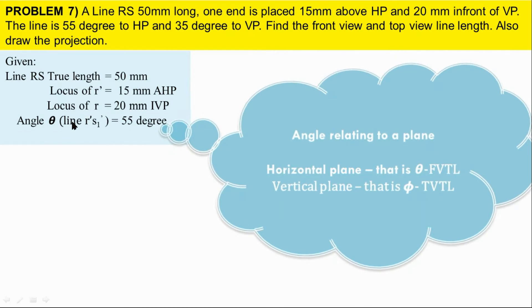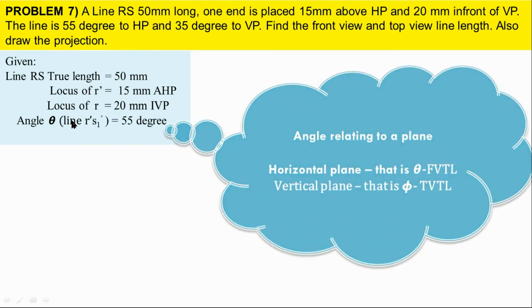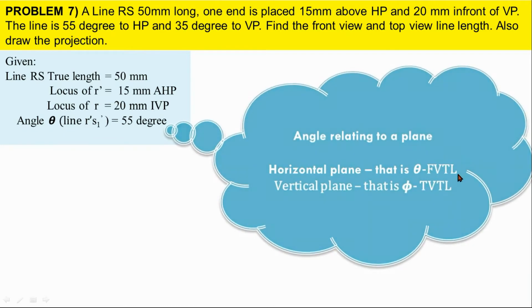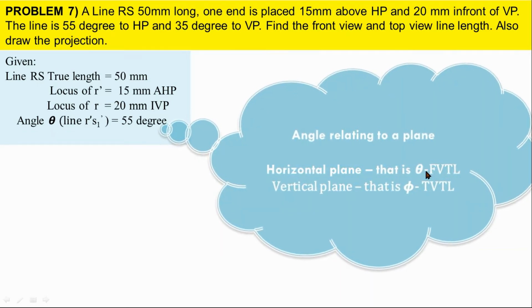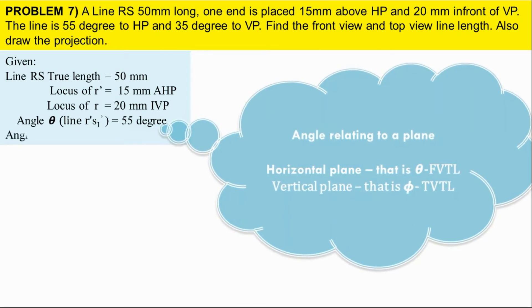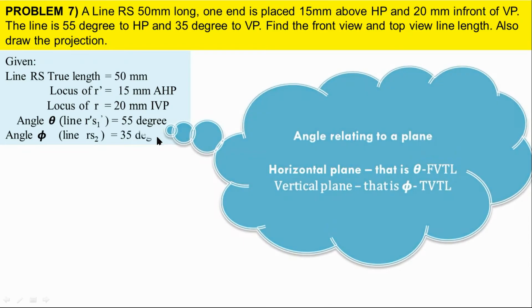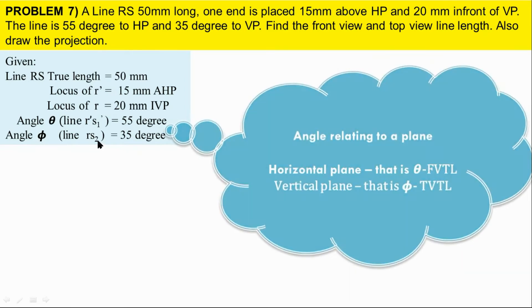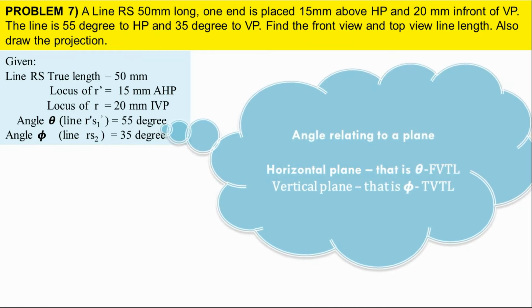Where do we draw theta? Just recall the base diagram. Theta is nothing but R dash S1 dash, that is front view true line. You have to draw the 55 degree to HP in the vertical plane, that is above the XY line. Similarly, 35 degree to VP is also given — that will be projected in the horizontal plane, that is below the XY. The name of that angle is pi, and the name of the line is RS2.